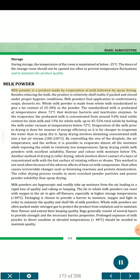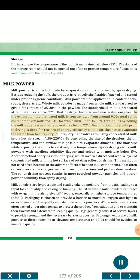Milk powder is a product made by evaporation of milk followed by spray drying. Besides reducing the bulk, the product is relatively shelf-stable if packed and stored under proper hygienic conditions. Milk powders find application in confectionery, soups, desserts, etc. Whole milk powder is made from whole milk standardized to give a fat content of 25 to 28% in the powder. The standardized milk is preheated at temperatures above 72 degrees Celsius, which destroys bacteria and inactivates enzymes. In the evaporator, the preheated milk is concentrated from around 9.0% total solids for skim milk and 13% for whole milk, up to 45–52% total solids by boiling under vacuum at temperatures below 72 degrees Celsius. Spray drying involves atomizing concentrated milk into a hot air stream at 180–220 degrees Celsius. By controlling the size of the droplets, the air temperature and the airflow, it is possible to evaporate almost all the moisture while exposing the solids to relatively low temperatures. Spray drying yields milk powders with excellent solubility, flavor and color with moisture below 5%.